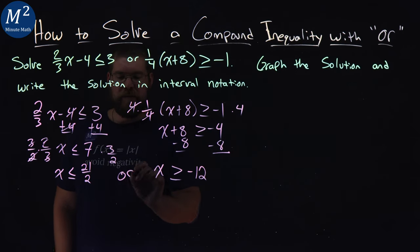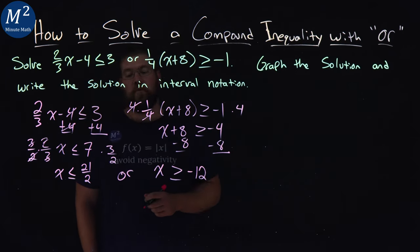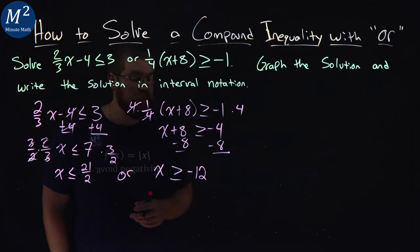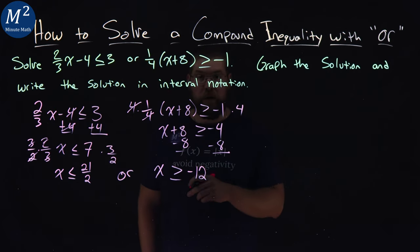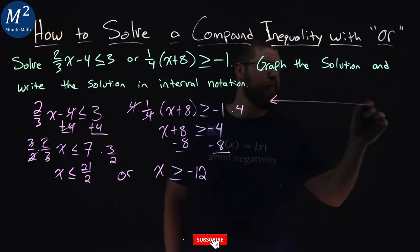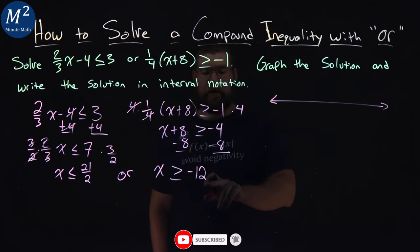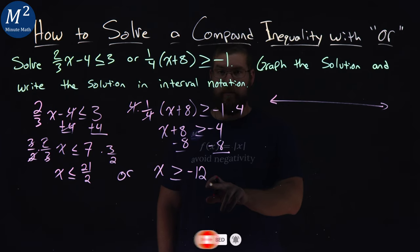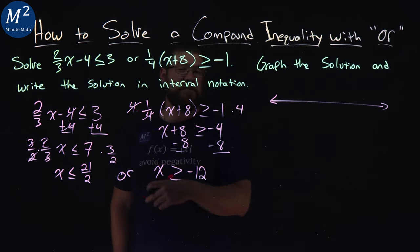And we have our or statement. x is less than or equal to 21 over 2, or x is greater than or equal to negative 12. So, let's go graph these inequalities here. We're going to jump some values here. There's a lot to put in.